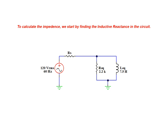To calculate the impedance we start by finding the inductive reactance present in the circuit. From this calculation we find that the inductive reactance present in the circuit is equal to 2827.433 ohms.